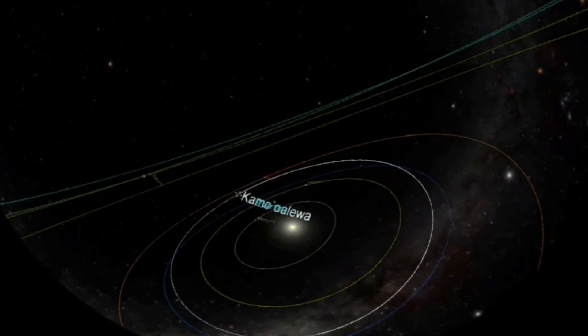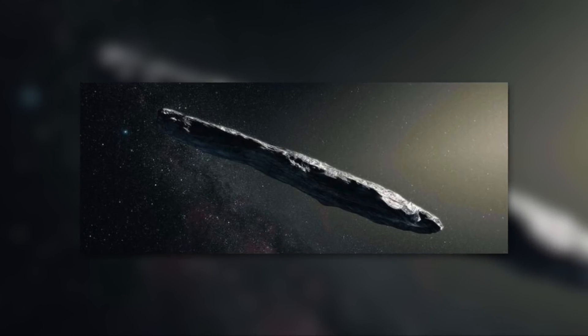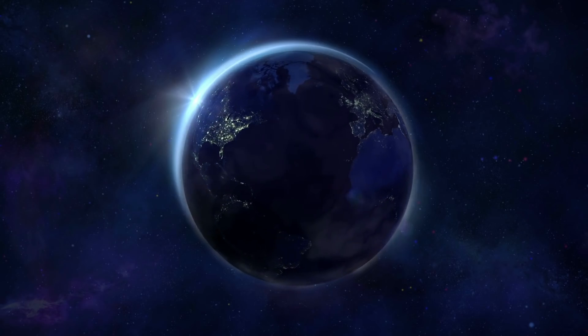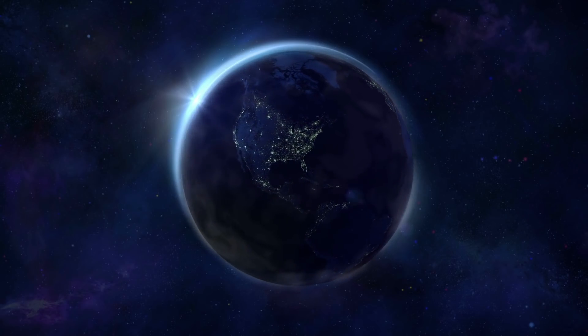The asteroid initially rushes ahead of the Earth a bit in its orbit around the sun, but then it loses speed, flies behind it for a while, only to increase its speed again. It then once again overtakes our planet and so the process repeats itself.